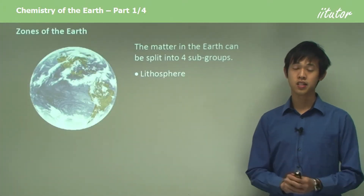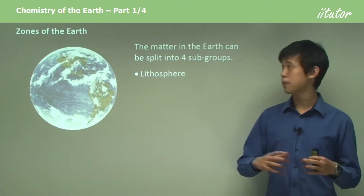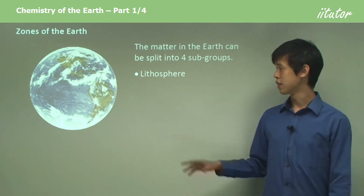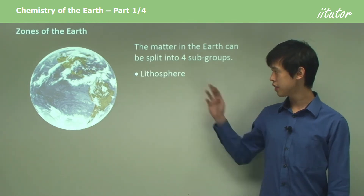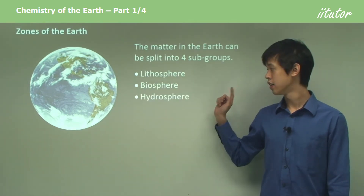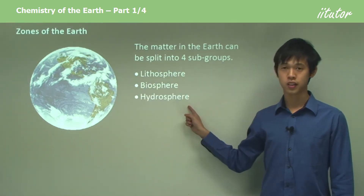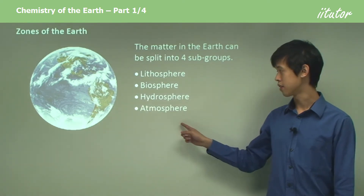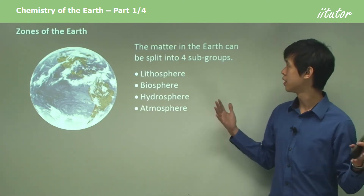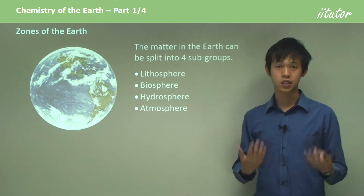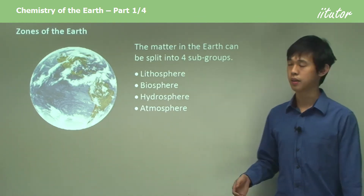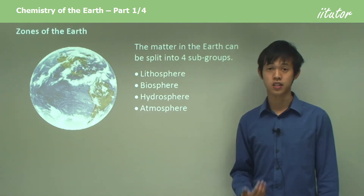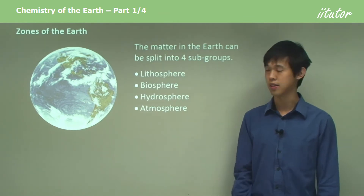The first thing to understand is that the chemistry of the Earth is split into four major subgroups: the lithosphere, the biosphere, the hydrosphere, and the atmosphere. These are the four major subgroups of matter that we see in the Earth, and we'll go through what each of these are as we go through this lesson.